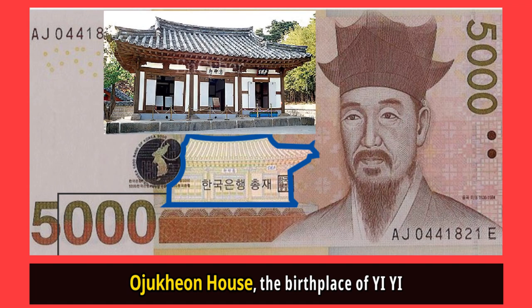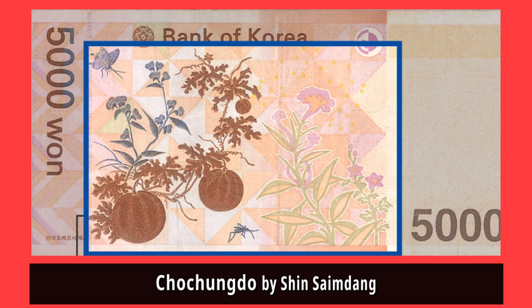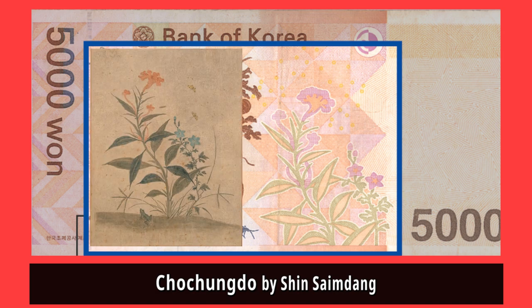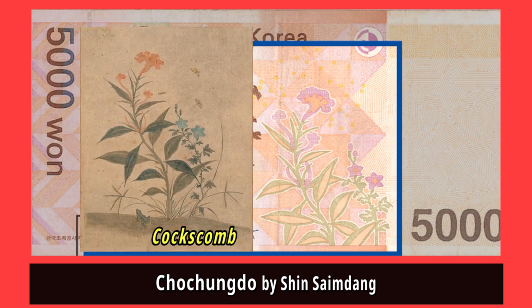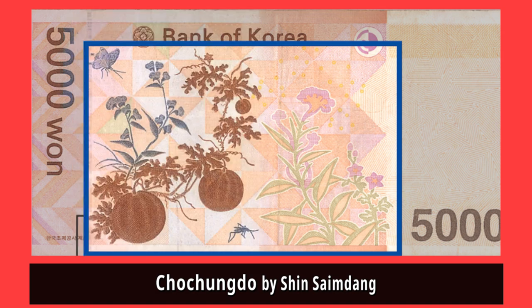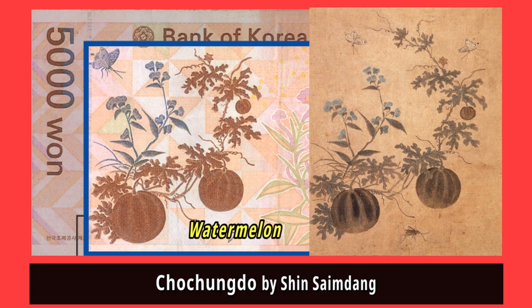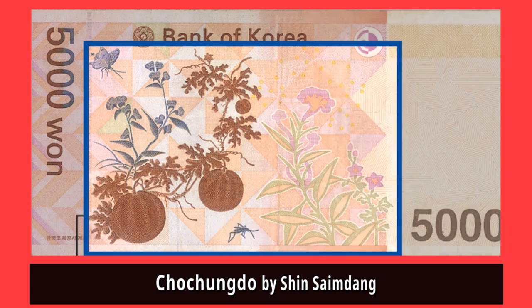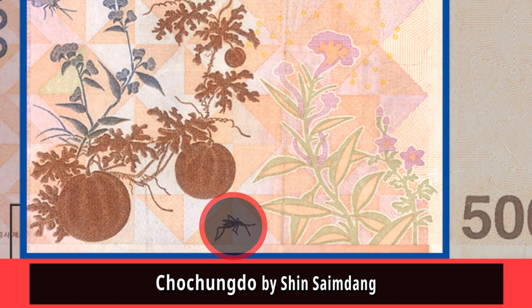Ojukkon is the birthplace of Yi and is located in Gangneung city of Gangwon province. On the back there is a picture called the Chochungdo, which means 'grass and insects.' On the left there is a picture of a coxcomb and on the right there is a watermelon. Chochungdo was painted by Yi's mother, Shinsa Imdang, who is also a respected historical figure. If you look more closely, you can see a Korean grasshopper.